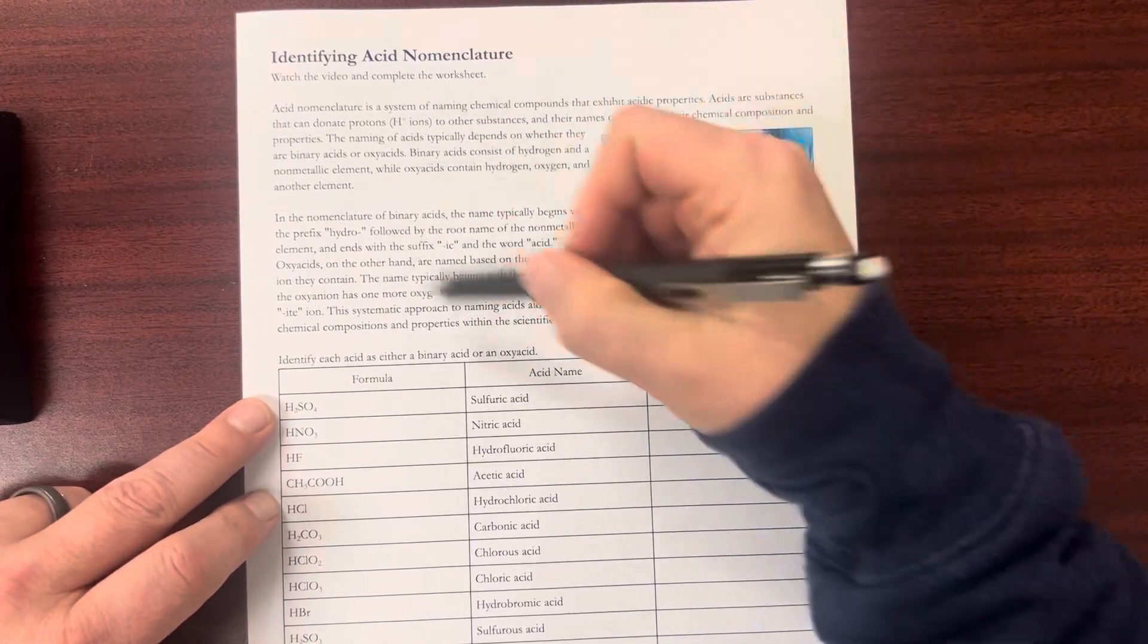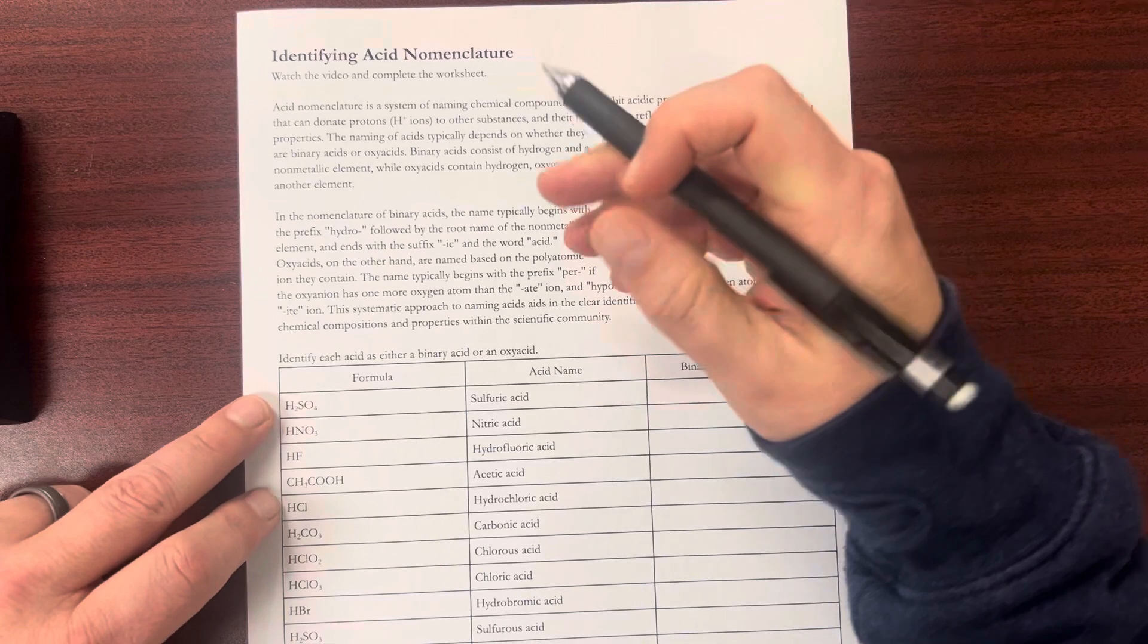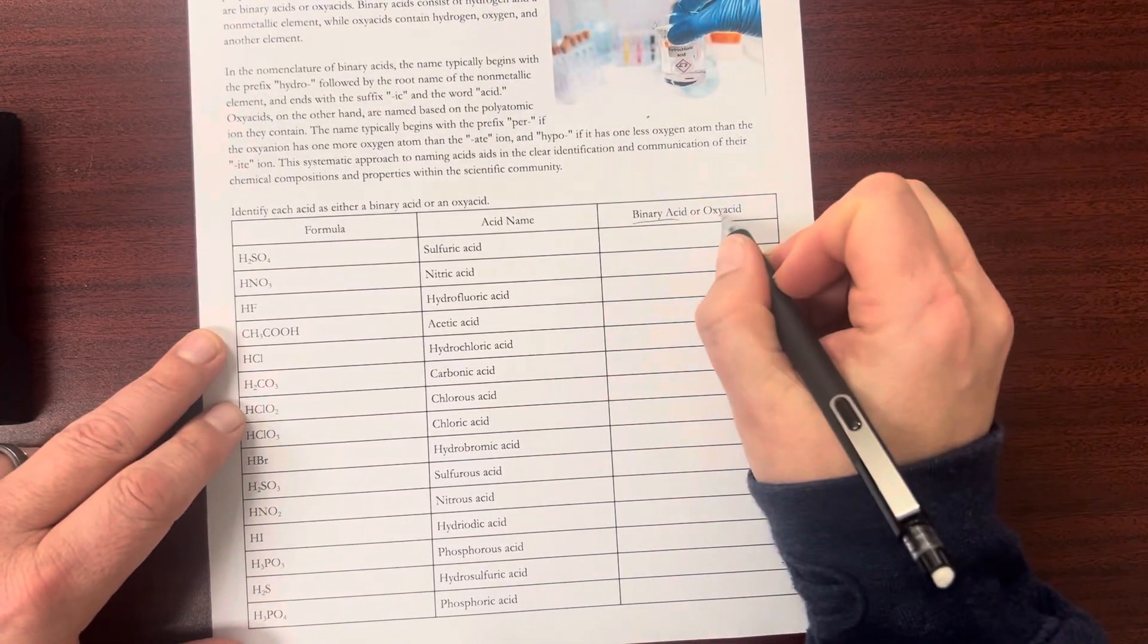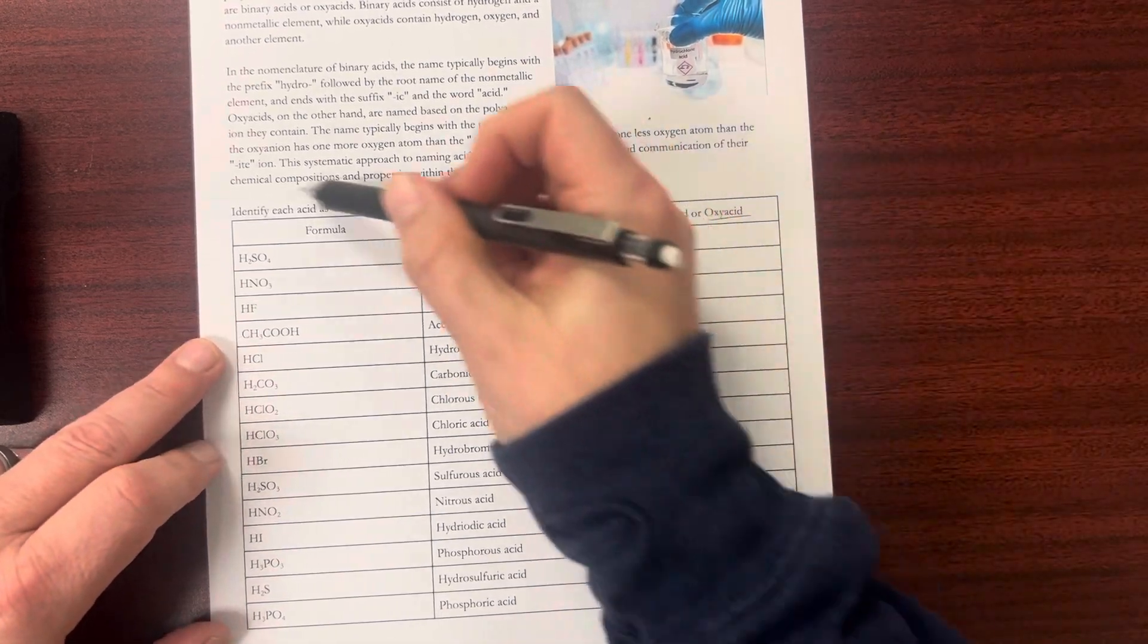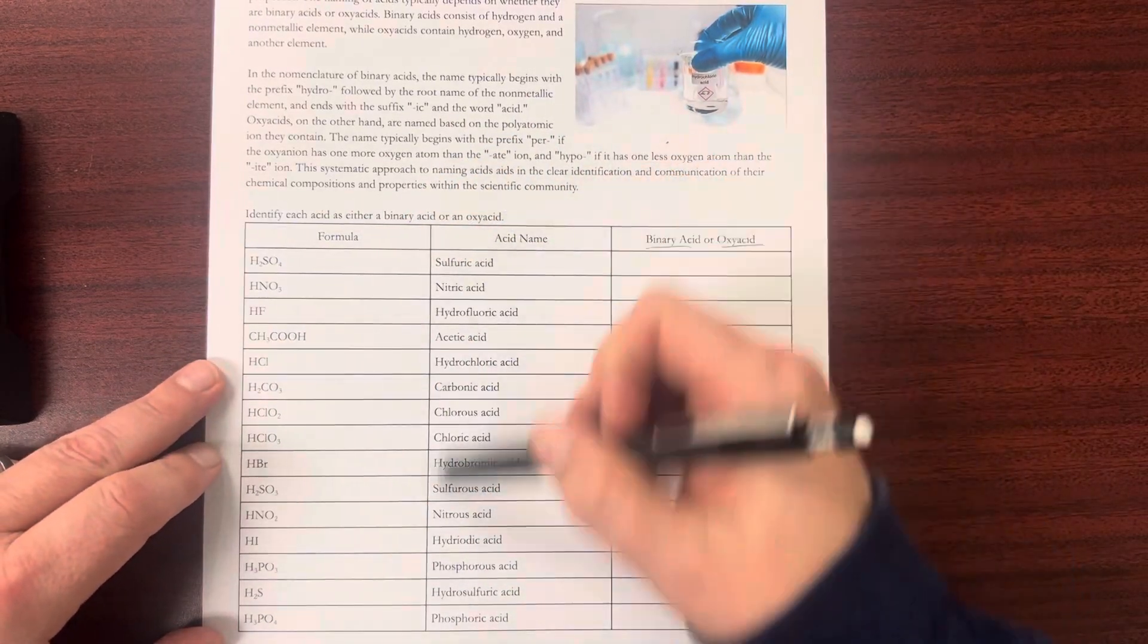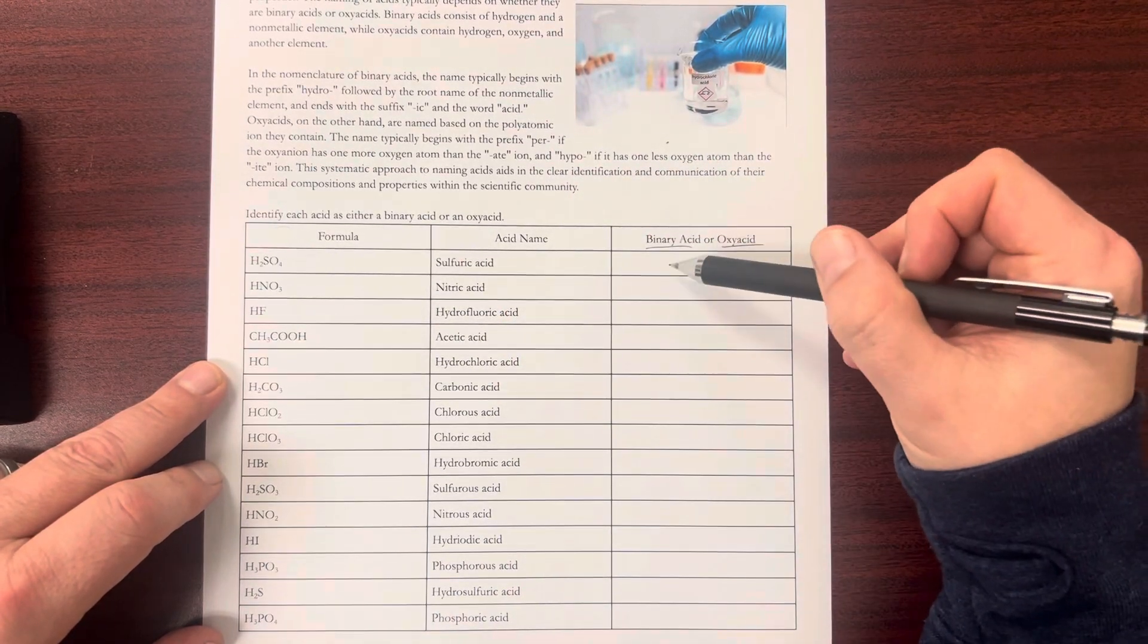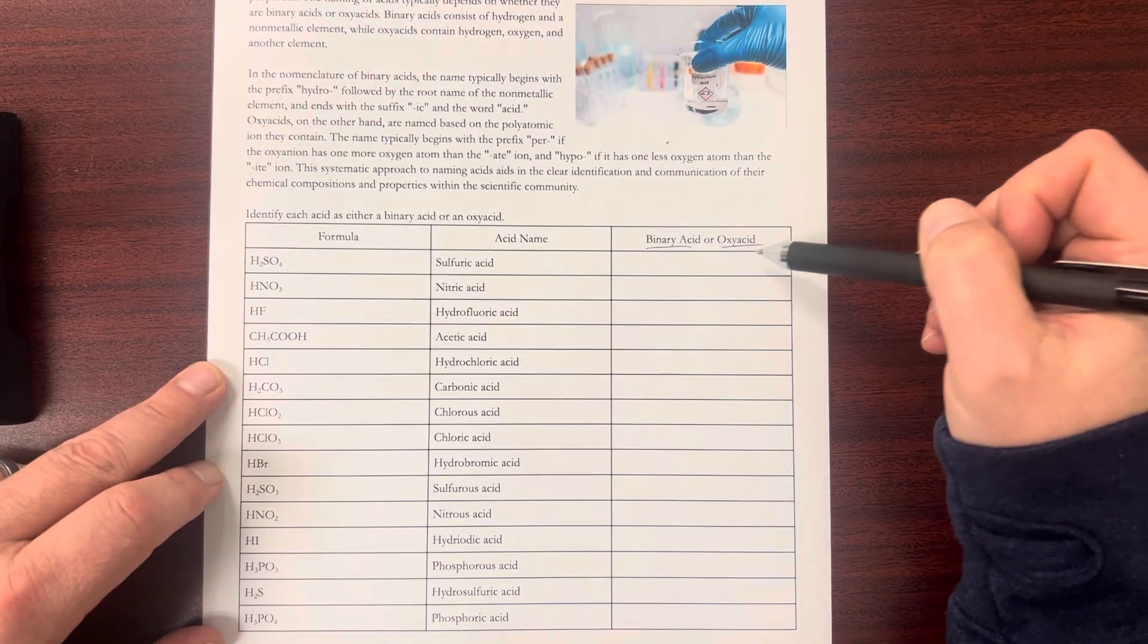It talks a little bit about naming acids here, but we're going to keep it focused on binary acids and oxy acids. We've got the formula, we've got the acid name, and we have to determine whether each one is binary or oxy acid.